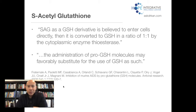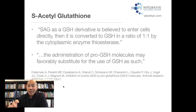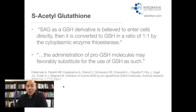That's why most of the time IV injections use reduced glutathione, bypassing the oral route. But for oral supplements you want S-acetylglutathione — if your glutathione product doesn't say S-acetylglutathione, it doesn't have this benefit. A 2008 journal article in Antiviral Research states that S-acetylglutathione enters cells directly, then is converted to glutathione at a one-to-one ratio by the cytoplasmic enzyme thioesterase. So administration of this pro-glutathione molecule may favorably substitute the use of glutathione directly.